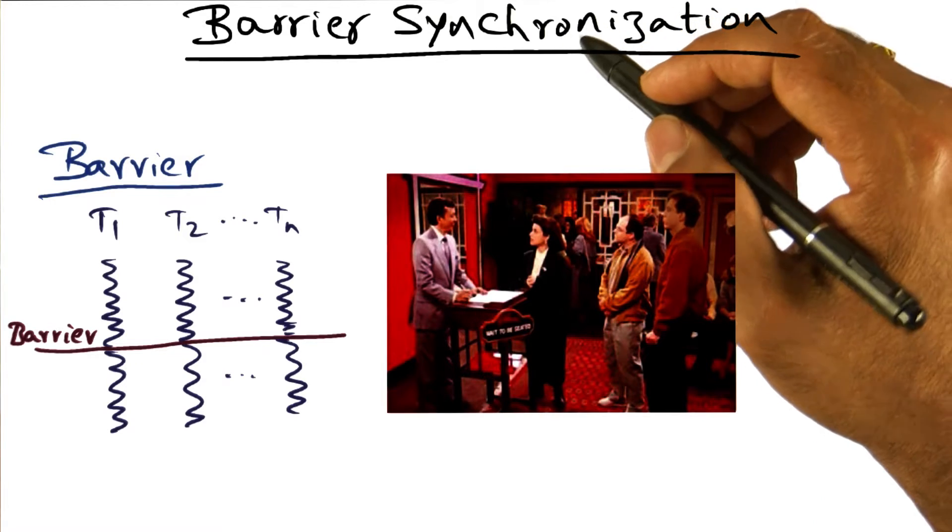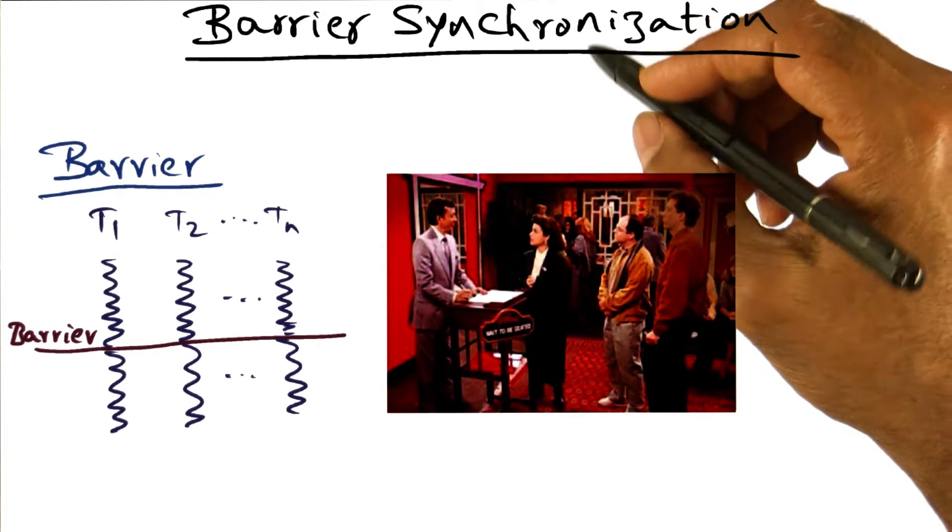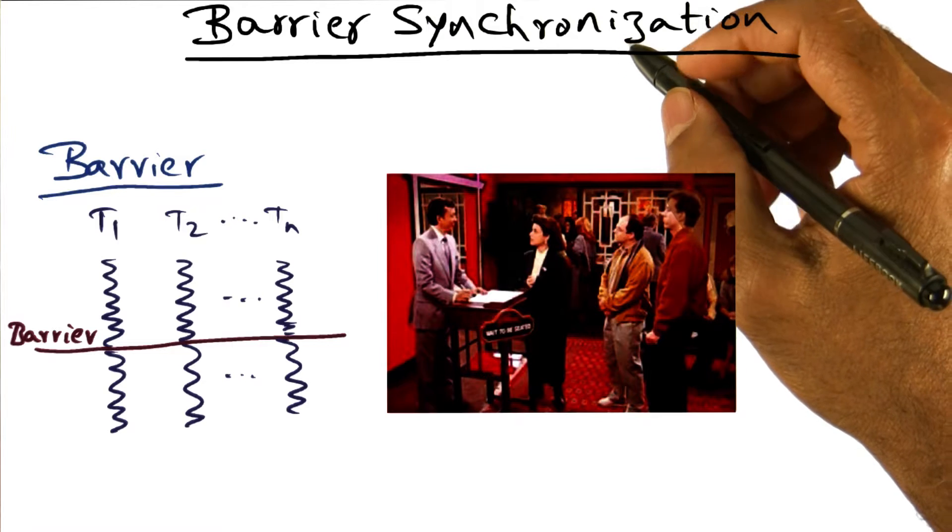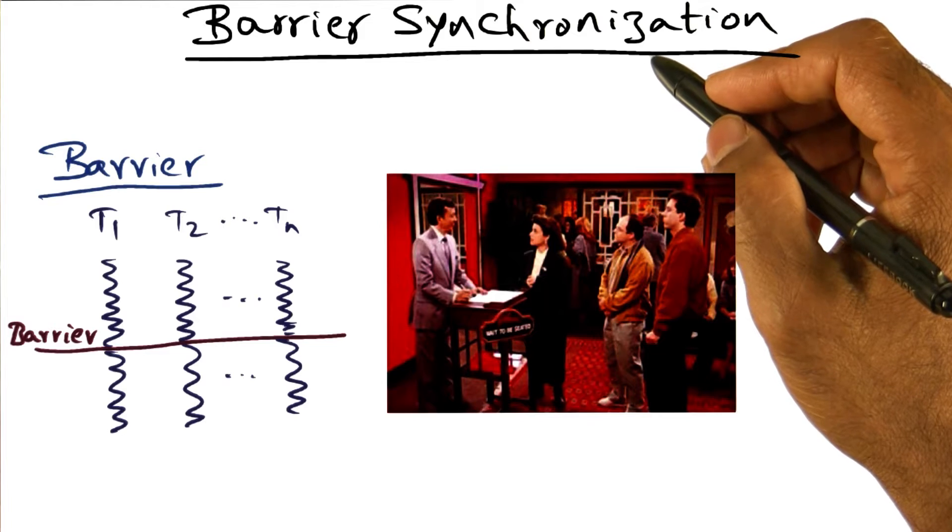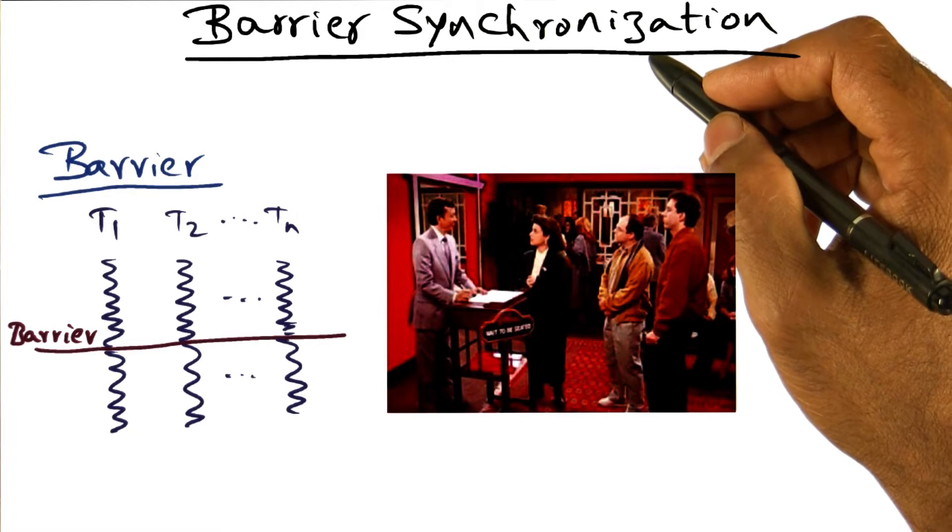In the previous lesson, we looked at efficient implementation of mutual exclusion lock algorithms. In this lesson, we're going to look at barrier synchronization, how to implement that efficiently in the operating system.